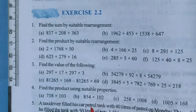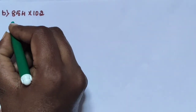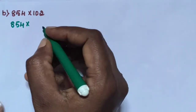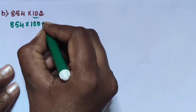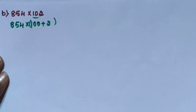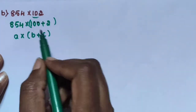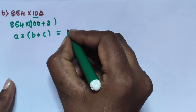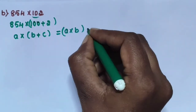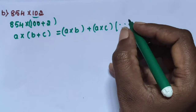Next sub-question B: 854 into 102. This is also using the same process. 854 into 102, written as 100 plus 2. A into (B plus C), where A is 854, B is 100, and C is 2. A into (B plus C) equals A into B plus A into C, using distributive property.